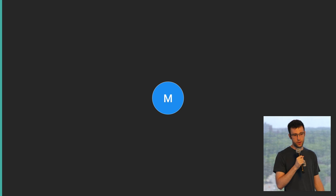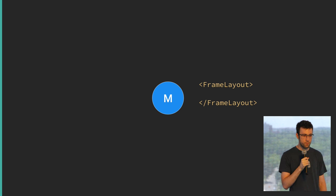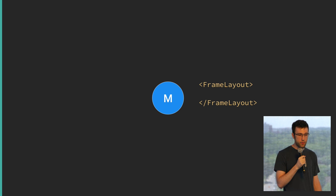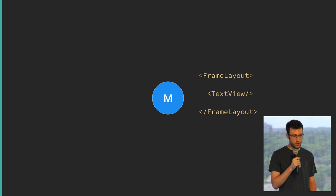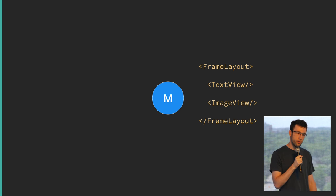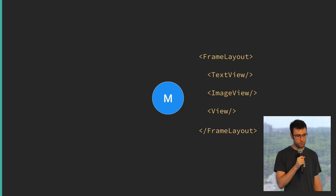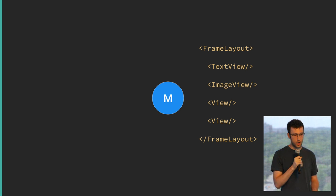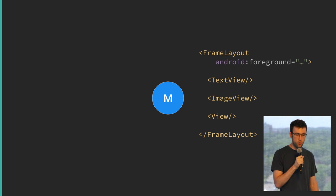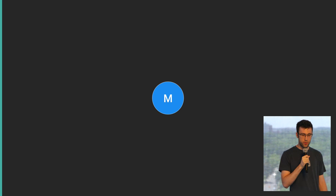So how would you do this with standard Android views and XML? You need a layout to wrap all your views together — we'll start with a FrameLayout. The FrameLayout is going to have the background on it, set dynamically in code based on the user. You need a TextView to show the initial, an ImageView on top for the image, a View for showing the stroke border, and on top of that a view for the press state. We can optimize this a little by putting a foreground on the layout.